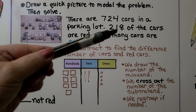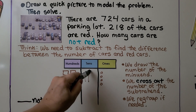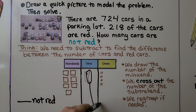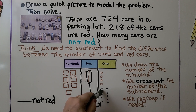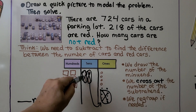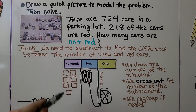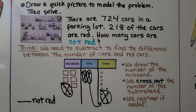We start by taking away 8 ones, but we can't — we only have 4. So we take a 10 and move it to the ones place as 10 ones. Now we can take 8 away: cross out 4 and 4 more, that's 8 removed. We cross out the 10 we moved. Now we need to take away 1 ten, so we cross that out. And we need to take away 2 hundreds, so we cross those out too.